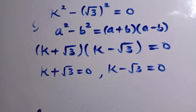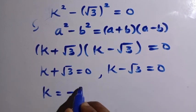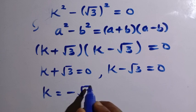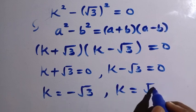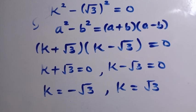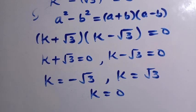So therefore from here we are going to have the value of K equals minus root 3, and also we have K equals root 3. So I've gotten 3 answers: K equals 0 is part of the solution here.